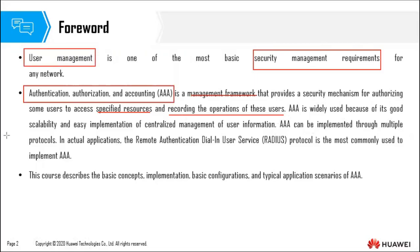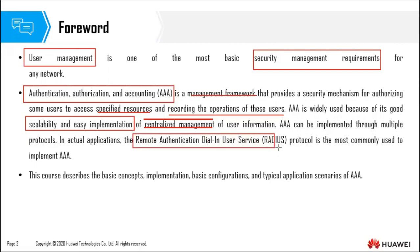AAA is widely used because of its good scalability and easy implementation of centralized management of user information. We say centralized management because AAA uses the client-server architecture. You have an AAA server which can store the user information and perform authentication, authorization, and accounting. AAA can be implemented through multiple protocols, but in actual applications, the Remote Authentication Dial-In User Service — commonly referred to as the RADIUS protocol — is the most commonly used to implement AAA.